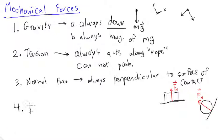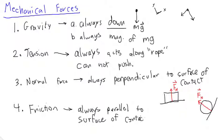The fourth and final mechanical force is friction. Friction occurs only when there's friction. It's always parallel to the surface of contact. And a nice sort of rule of thumb for friction, it always tries to prevent slip.